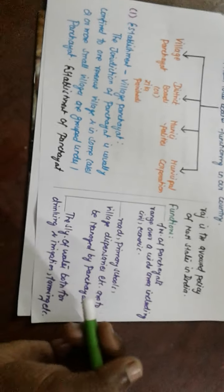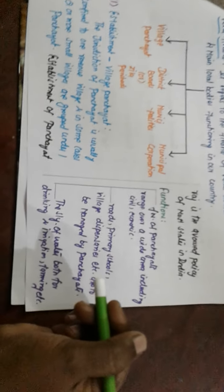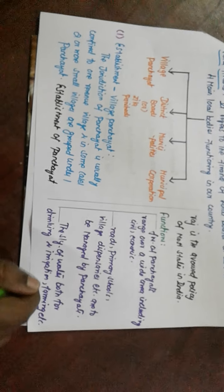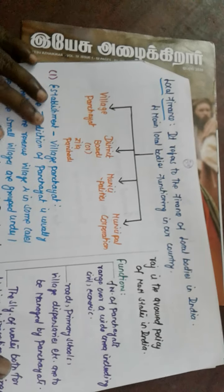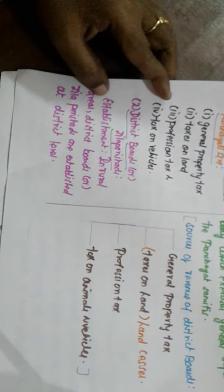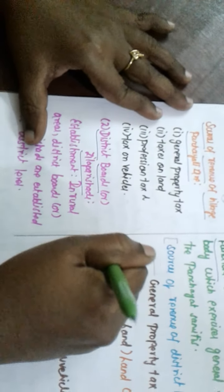Another very important function is providing drinking water and water facilities, especially for those who rely on agriculture. They give importance to the agriculture sector — irrigation purposes, drinking water facilities, and farming activities. These are the main important functions undertaken by the village panchayat. Next, we look at the sources of revenue — how they implement various economic activities in rural areas.